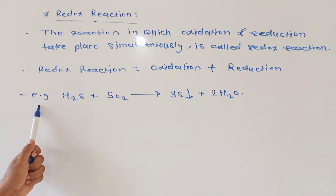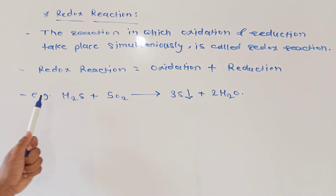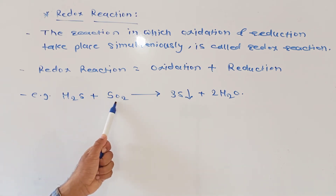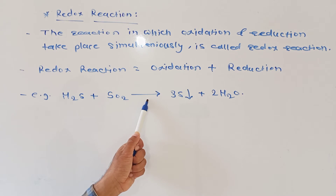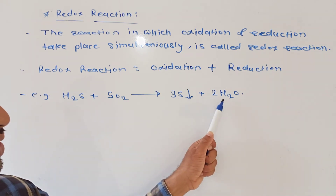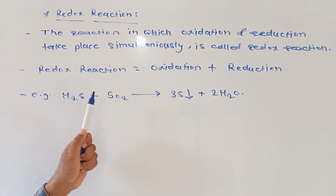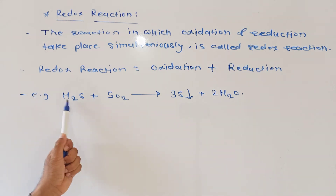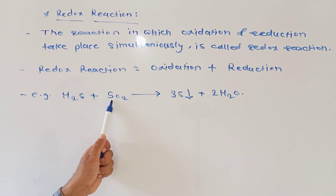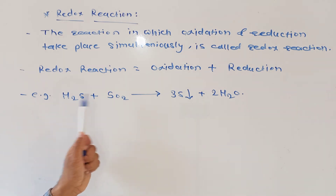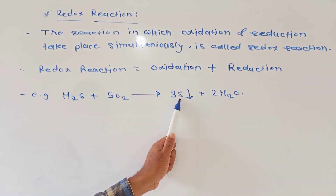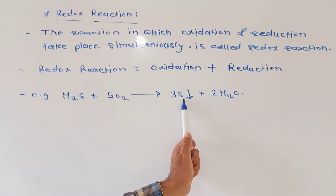Let us see an example of redox reaction. The example is: H₂S plus SO₂ is equal to three sulfur plus two H₂O. Here, H₂S is hydrogen sulfide and SO₂ is sulfur dioxide. These two reactants react, and only sulfur and water — two products — are created in this reaction.